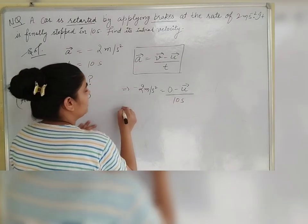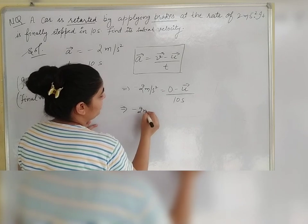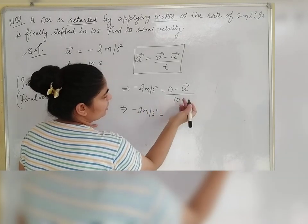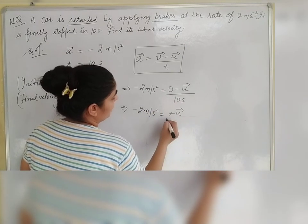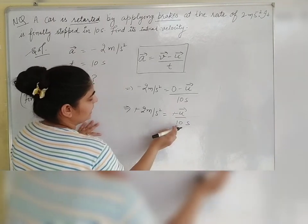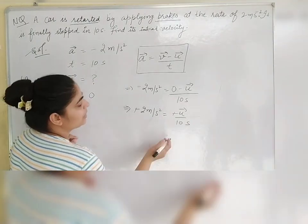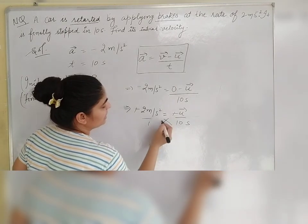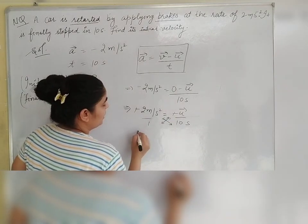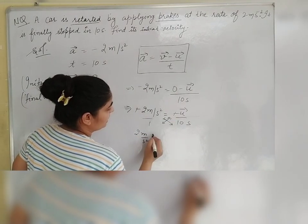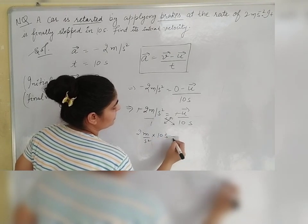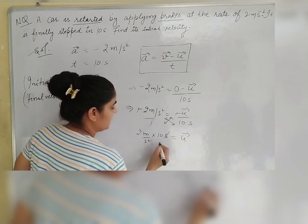Now, minus 2 meters per second square equals 0 minus U divided by 10 seconds. From this, if you cross multiply, 2 meters per second square multiplied by 10 seconds equals U. So U equals 20 meters per second.